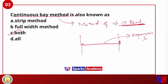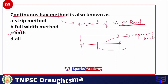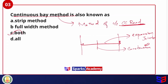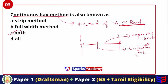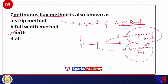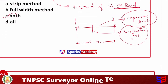In the Continuous Bay Method, no expansion joint is provided. However, construction joints are present. This single-lane width method uses a width of 4.5 meters and is a preferred method for constructing single-lane roads.